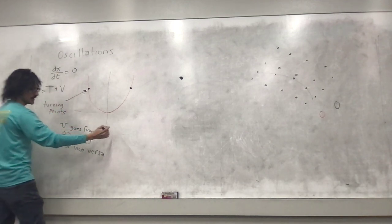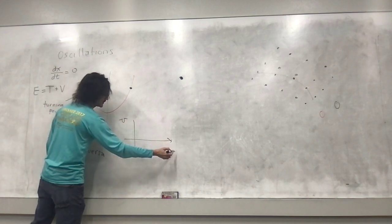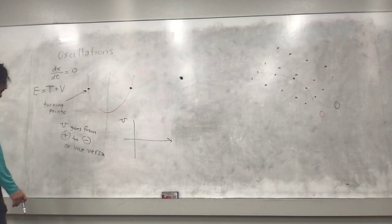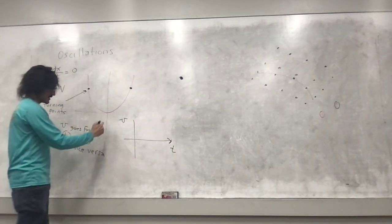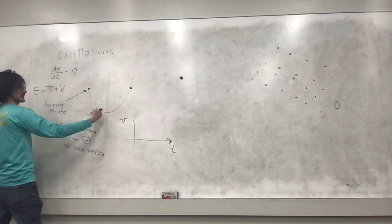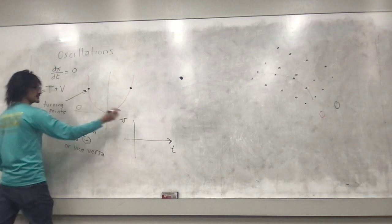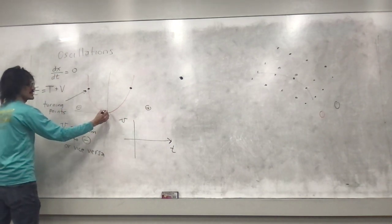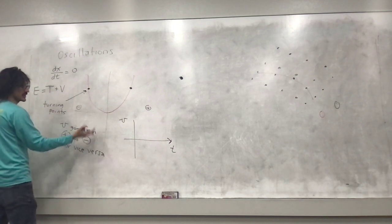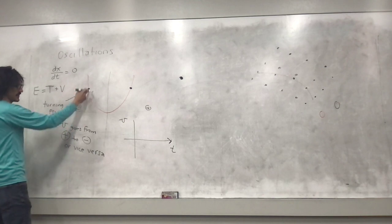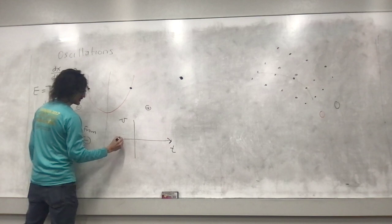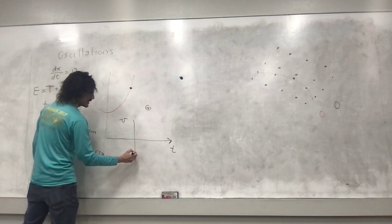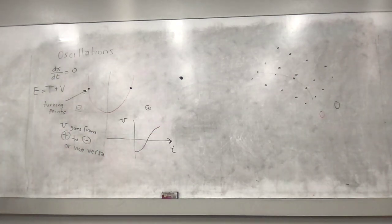So if you plot velocity as a function of time: if your particle is moving in the negative direction, the velocity is negative. As it moves up, it's decreasing in magnitude, still negative. Then over here it's going to be zero and become positive — it's going to travel in the positive direction and increase. So turning points are important.